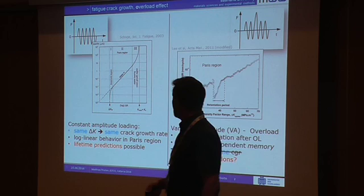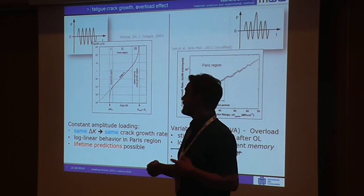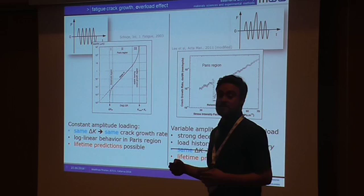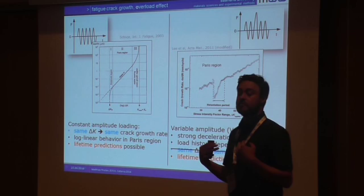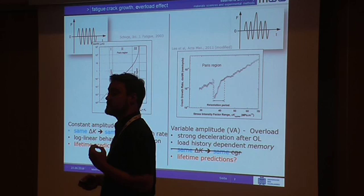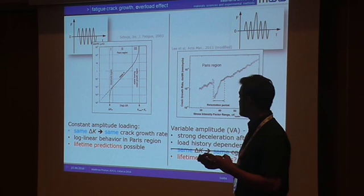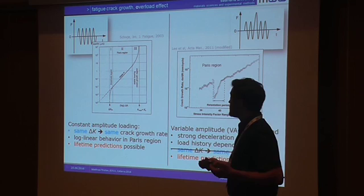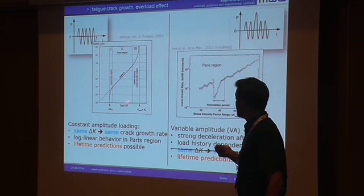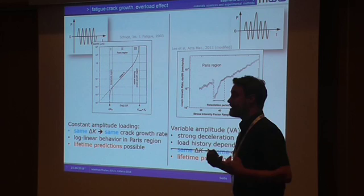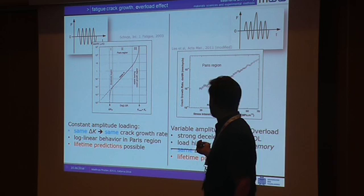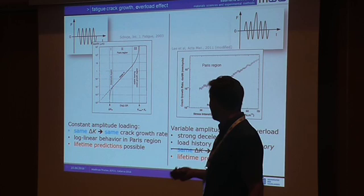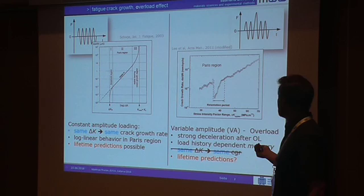If someone speaks of variable amplitude fatigue, you usually start with the overload effect, which has been mentioned several times at this conference. The main problem with fatigue failure is that usually you don't use a physical equation — you use an empirical equation based on the principle of superposition. You have an external macroscopic delta-K and try to link this to the microscopic scale, which is the crack rate. This works quite well under constant amplitude with the Paris law. The problem is, if you have one overload cycle, the crack begins to decelerate — a load-history-dependent memory effect.